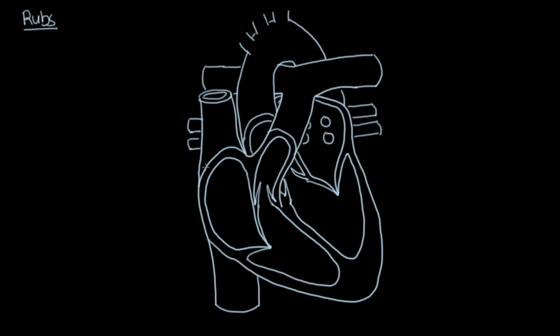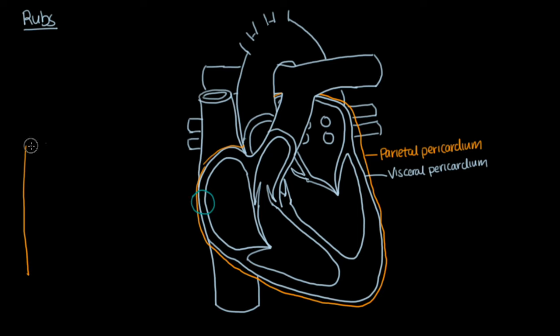The last heart sound we'll discuss are rubs. In the normal heart, the heart moves smoothly in the pericardial sac as the visceral and parietal layers are well lubricated and allows for good sliding. In conditions that cause any kind of inflammation of the layers, the visceral and parietal layers become more sticky and causes a squeaky rubbing sound as the heart is moving through its cardiac cycle.